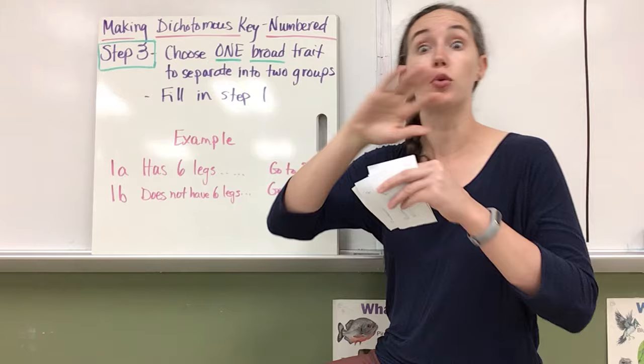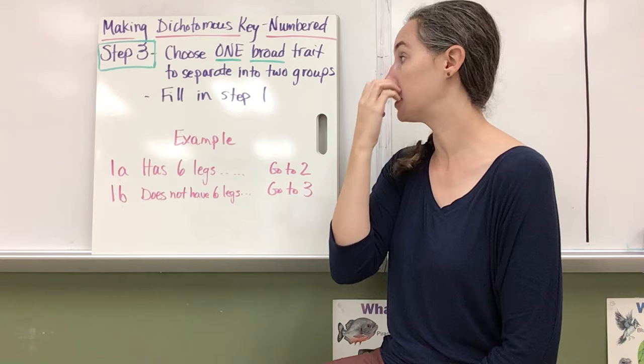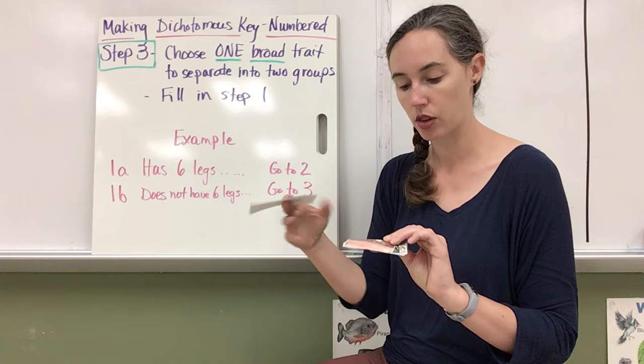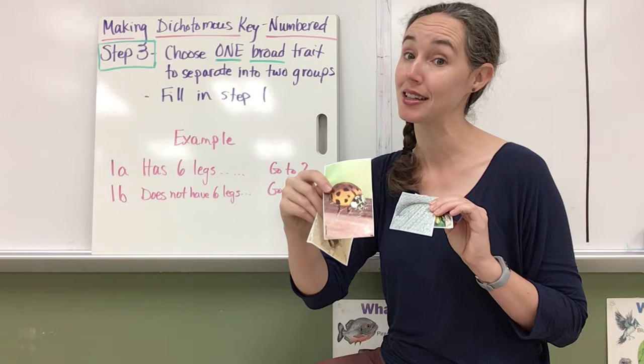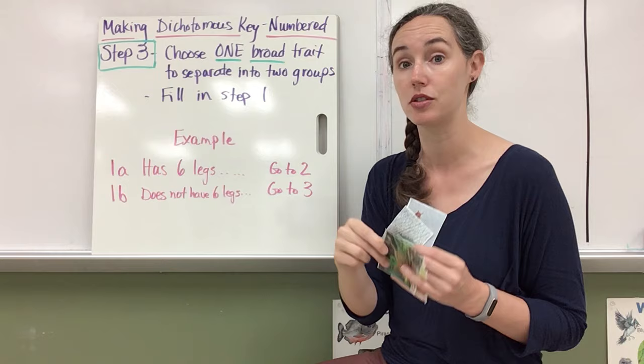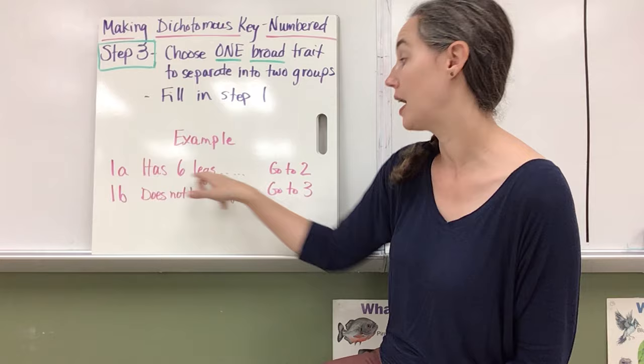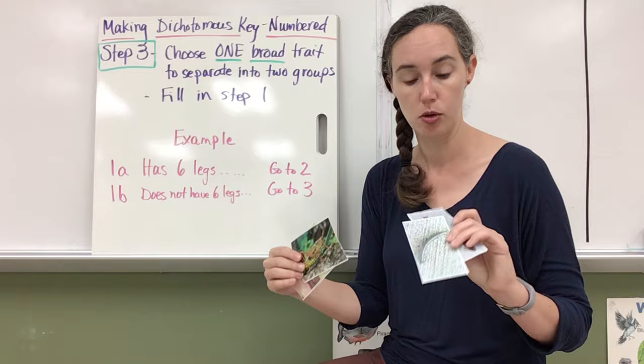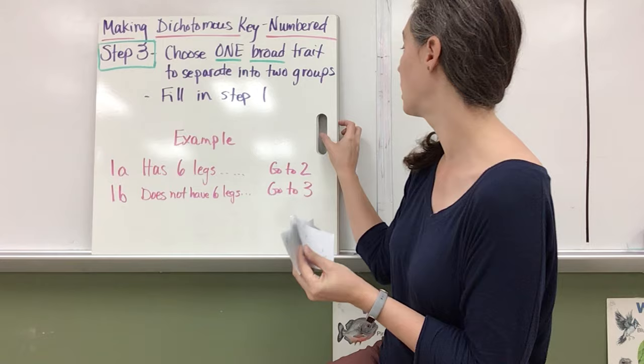The next step is to choose one broad trait to separate your huge set into two groups, and then you'll fill in step one. So for instance, I've got three insects: Asian lady beetle, Carolina tiger beetle, and eastern lubber grasshopper are insects. But we can't use insects because that's a classification. But one of the traits that all insects have is that they have six legs. So I can say has six legs, go to two, or does not have six legs. And that automatically breaks us into the millipede group and the insect group.